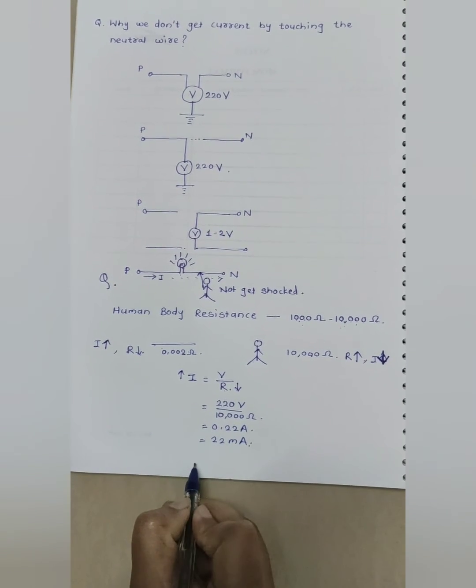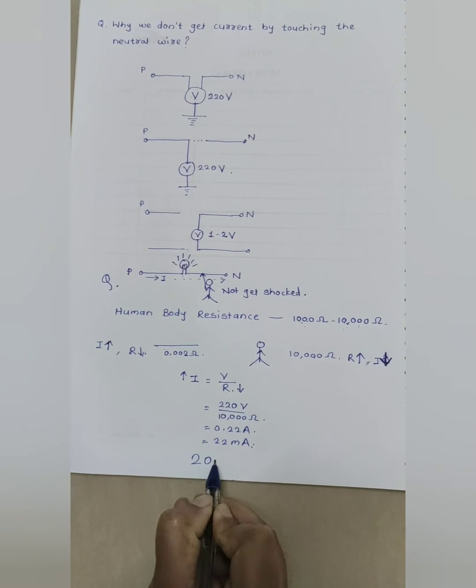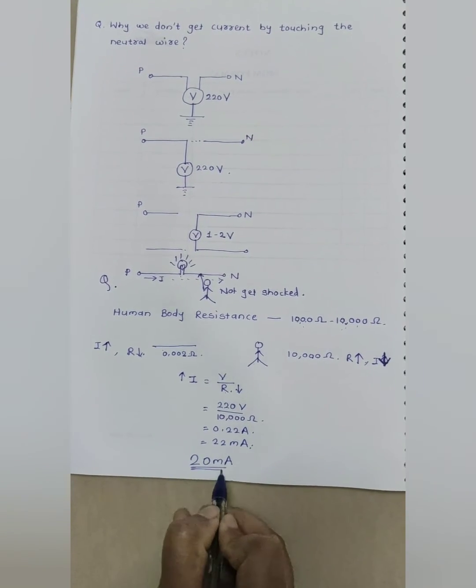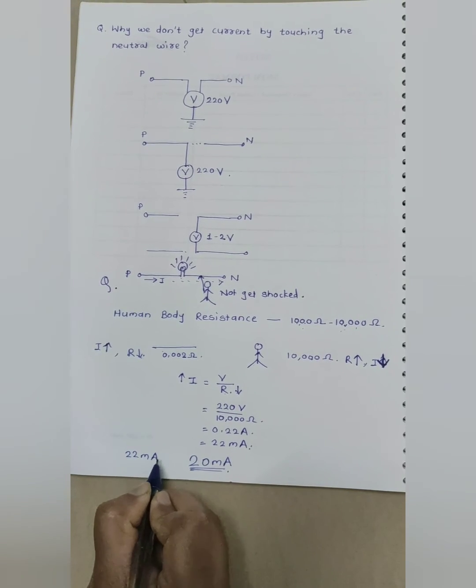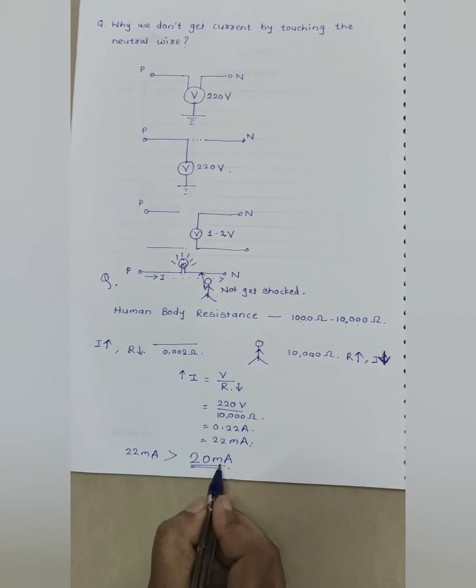But 16 milliampere is the maximum current an average man can grasp. So if 20 milliampere current flows through human body, he gets serious shock and can get paralysis of respiratory muscles.